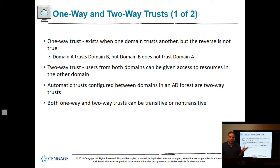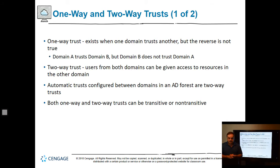You can create two-way trusts or one-way trusts. By default, a child domain or subdomain only has a one-way trust — the child trusts the parent, but the parent doesn't trust the child, just like in real life. A two-way trust allows both to happen. Automatic trusts configured between domains in an AD forest are also two-way trusts.